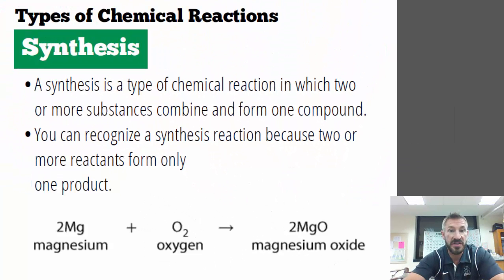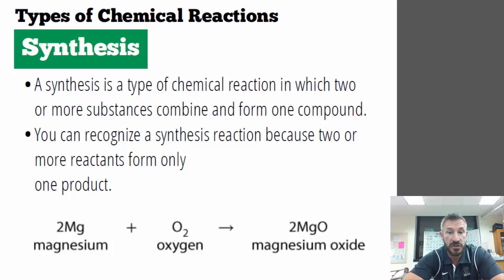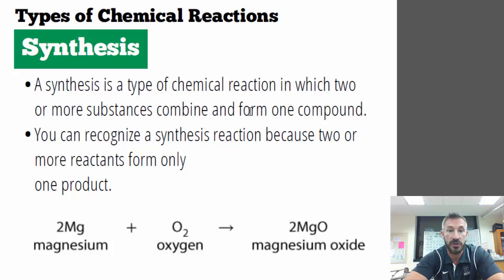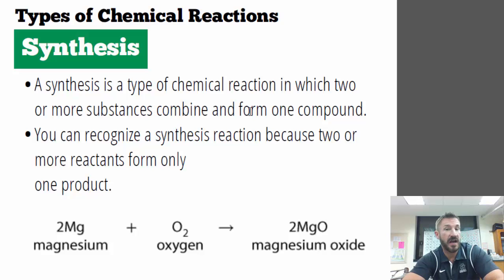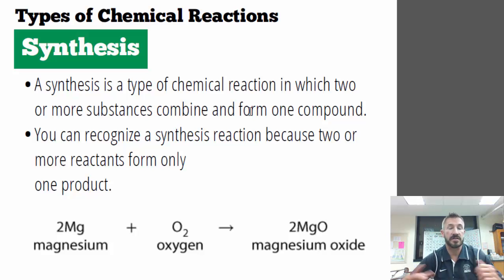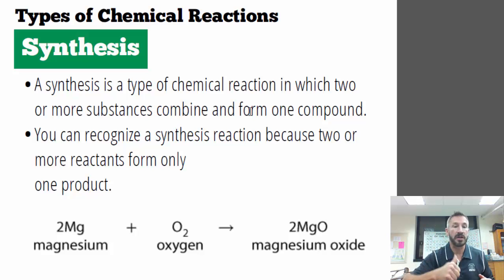Another example of synthesis is combining magnesium with oxygen to form magnesium oxide. Remember, oxygen is diatomic, so it's going to be O₂. So synthesis is a type of reaction in which two or more substances combine to form only one compound.